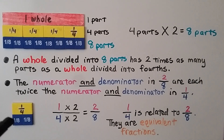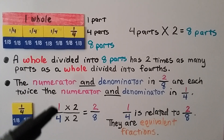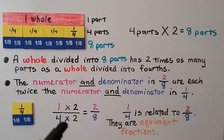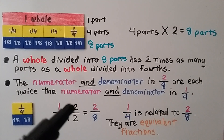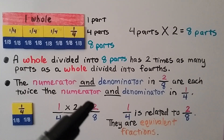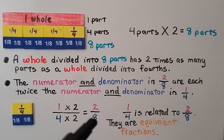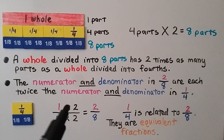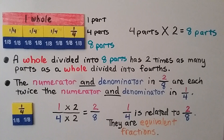Here we have one-fourth and here we have two-eighths — they're equivalent. If we have one-fourth and we multiply both the numerator and denominator by two, we get one times two equals two for our new numerator, and four times two equals eight for our new denominator. One-fourth is related to two-eighths. They are equivalent fractions — we multiplied both the numerator and denominator by that same number two to make an equivalent fraction.